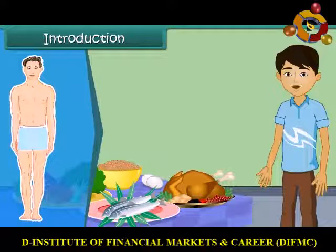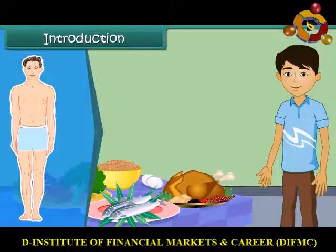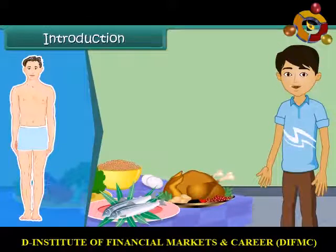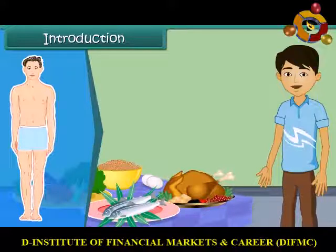We get our food from both plants and animals. Food has to be produced on a large scale to meet everyone's requirements. In this module, we will discuss about crop production and its management for the distribution of food.